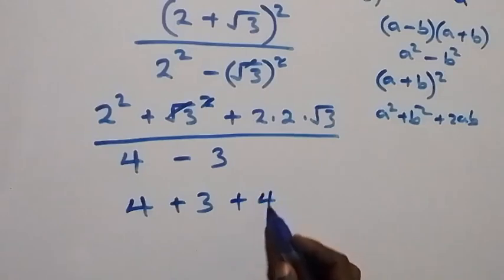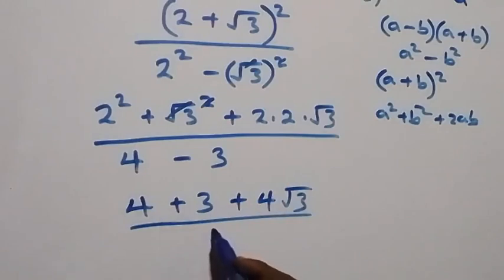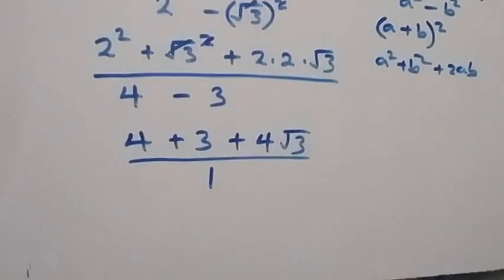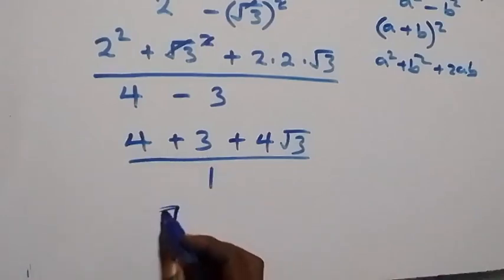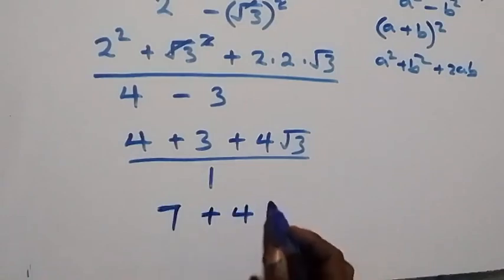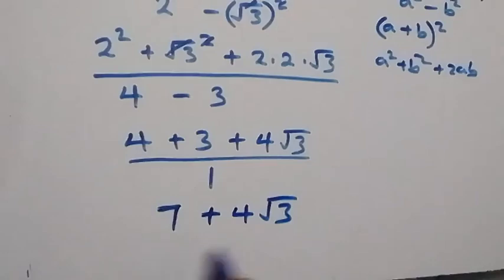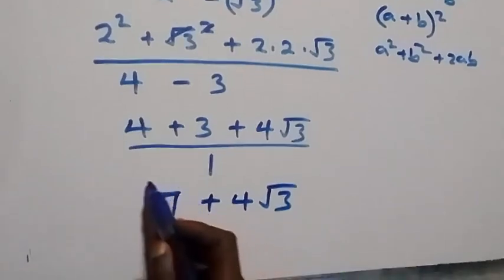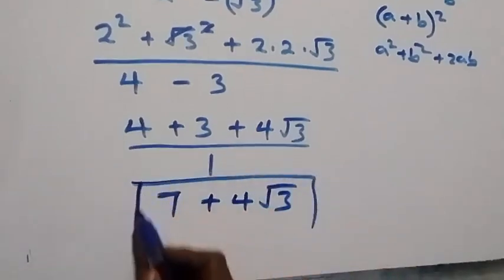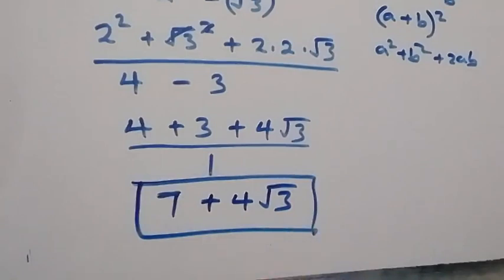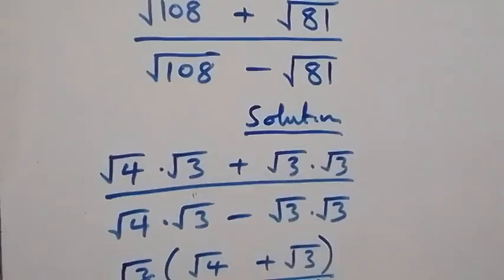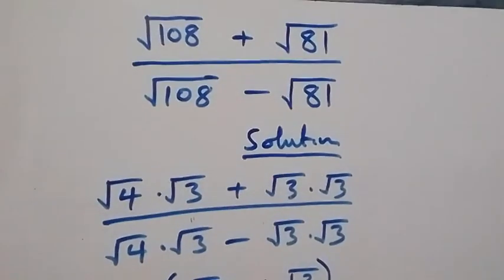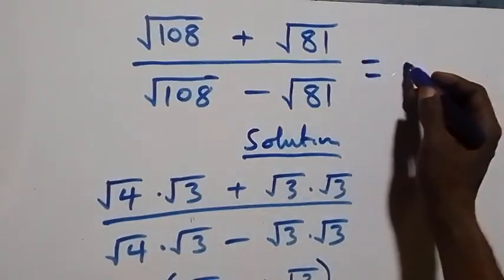From here, 4 plus 3 is 7, then plus 4√3 over 1, which is the same as 7 plus 4√3. So here we have the simplified form of the given problem: the answer is 7 + 4√3.